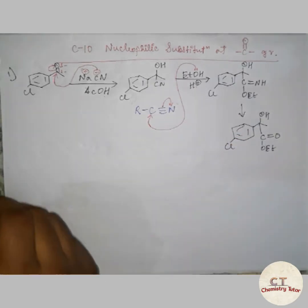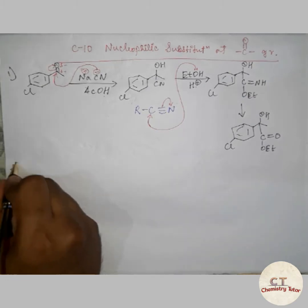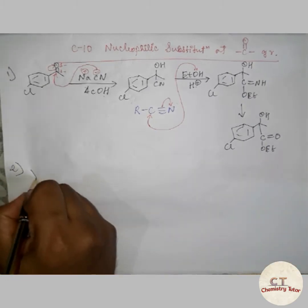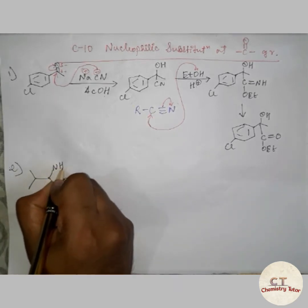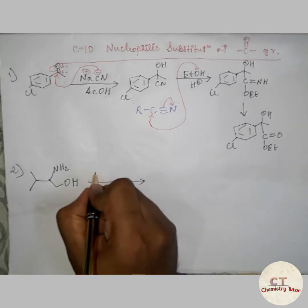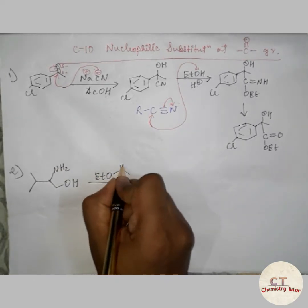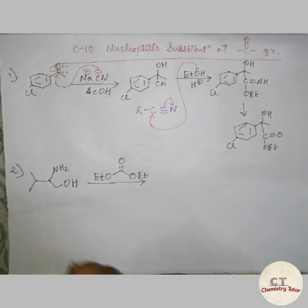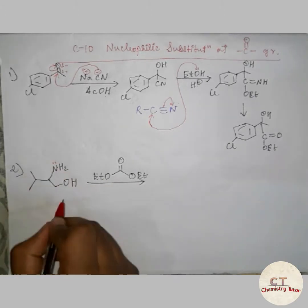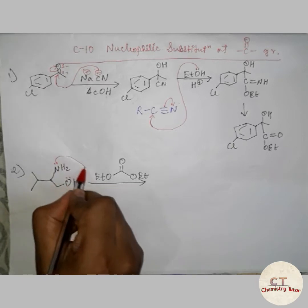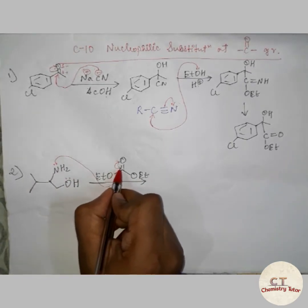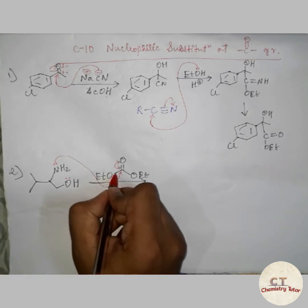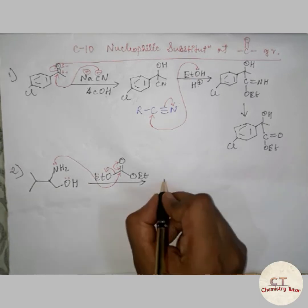Now moving on to another example. This compound on reaction with this reagent — what will the product be? Since the lone pair of nitrogen is more available compared to oxygen, nitrogen will attack at the carbonyl carbon. The negative charge will come back to the oxygen, and since OH is a good leaving group, it will leave, giving the product.